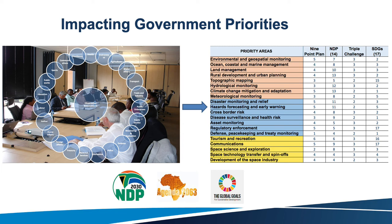We know that as time progresses, government re-articulates its priority areas, so we're also constantly looking at how the SANSA priority areas — informed by those engagements — align with the priorities of government. You can see some of the mappings all the way to the Sustainable Development Goals.